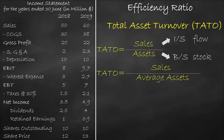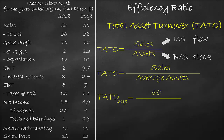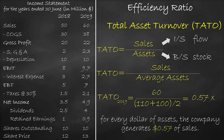Next, let's calculate the total asset turnover ratio for the year 2019. Sales in 2019 is equal to $60 million. Looking at the balance sheet for the average assets in 2019 and 2018: we have assets of $110 million in 2019 and assets of $100 million in 2018. So in our formula, we divide by average assets of ($110 million plus $100 million) divided by 2, which is equal to 0.57 times.